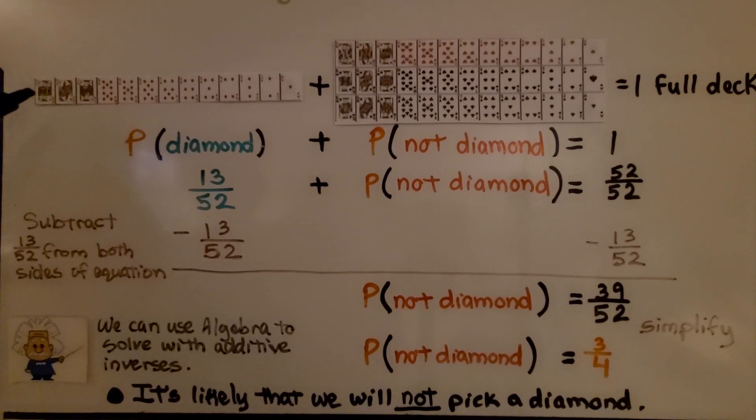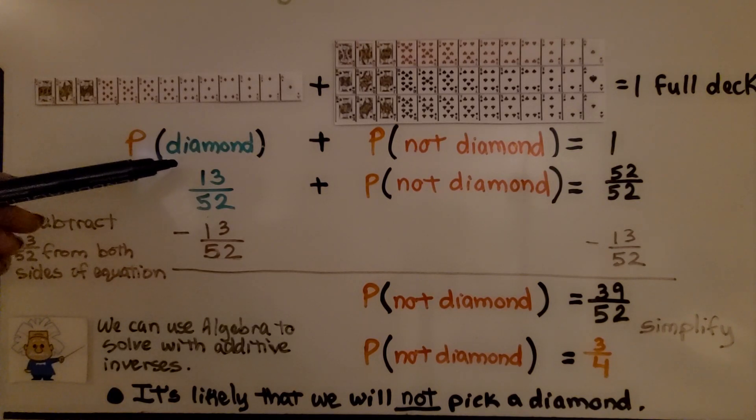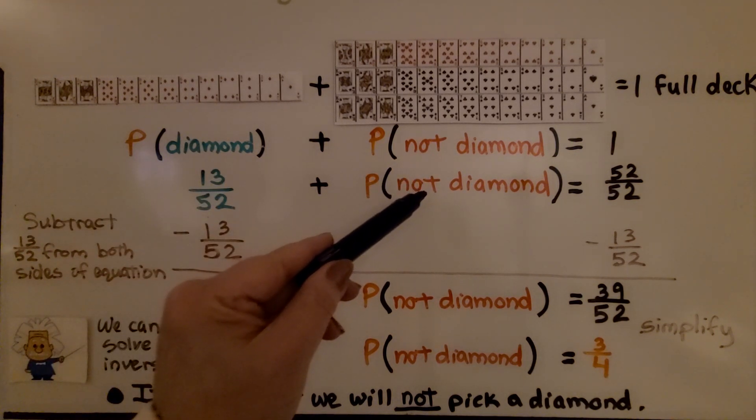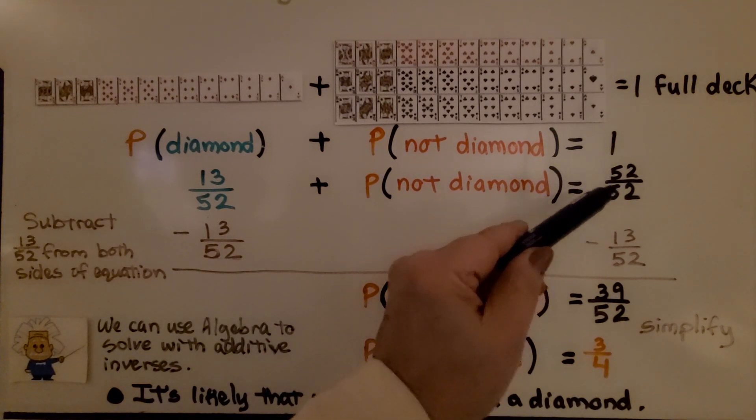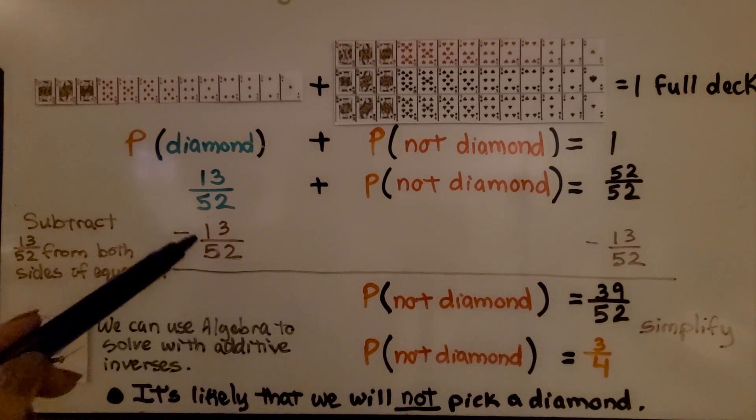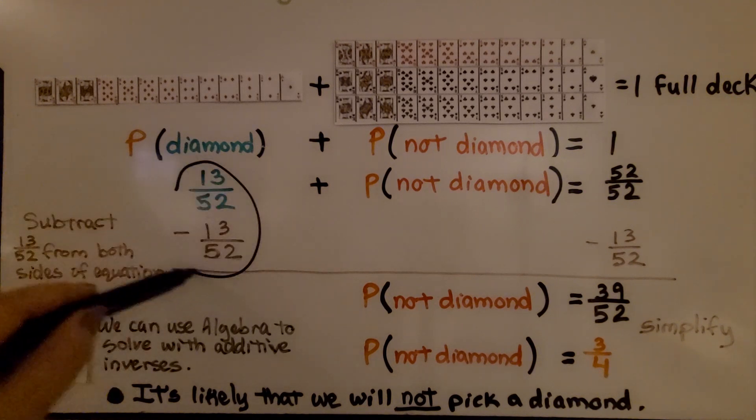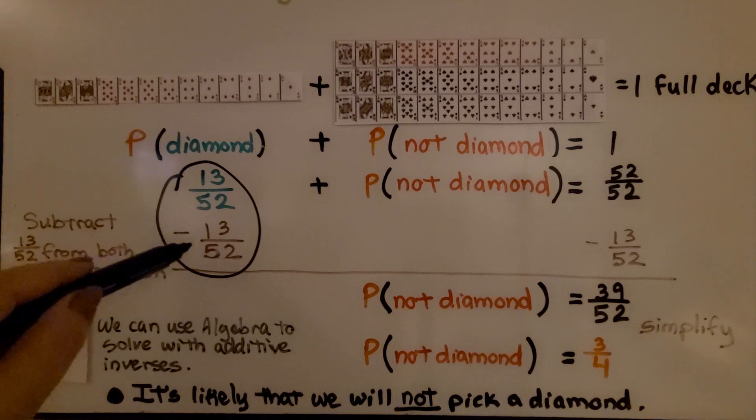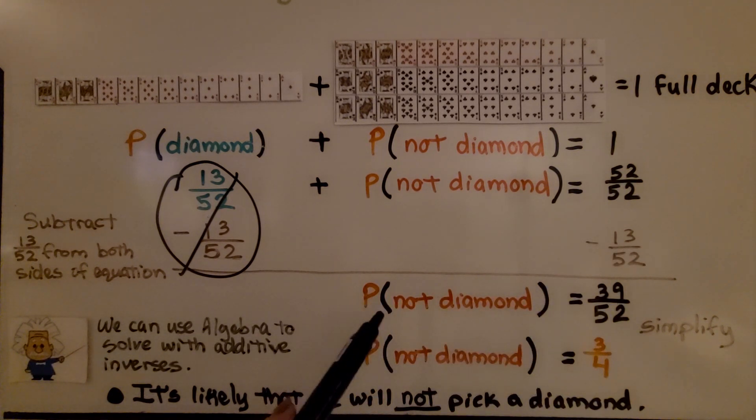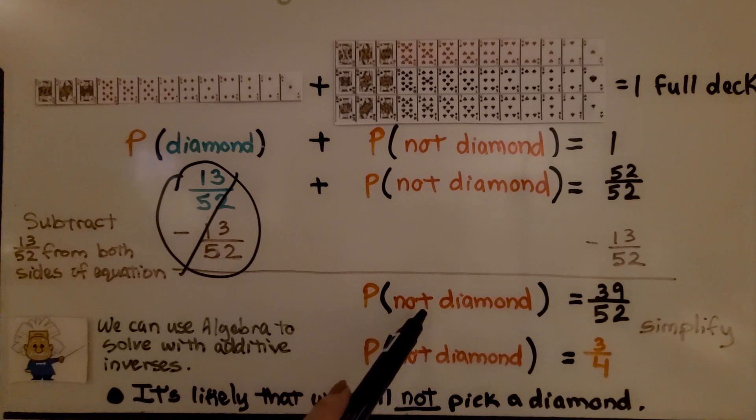Since there are 13 diamonds in the full deck, we would have the probability of the event as 13/52. If we add that with the complement of not picking a diamond, it should equal 52/52, same numerator and denominator as one whole. We can use algebra to solve this with additive inverses. We subtract 13/52 from both sides of the equation. We have positive 13/52 and a negative 13/52, and we've eliminated that. When we subtract it from this side, we get 39/52. We know the complement, the probability of not picking a diamond, would be 39/52. We can simplify that to 3/4. So it's likely that we will not pick a diamond.